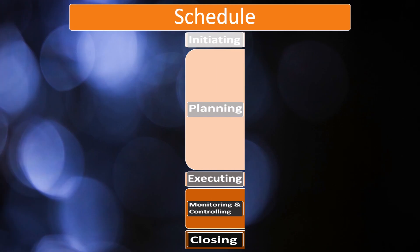In this video you should start to see some patterns emerge. Remember, one of the main things we're looking for is the patterns in each of the knowledge areas. If you see the patterns, then the anomalies will stand out even more. So like scope, schedule is heavy in planning and only has processes in planning and monitoring and controlling.